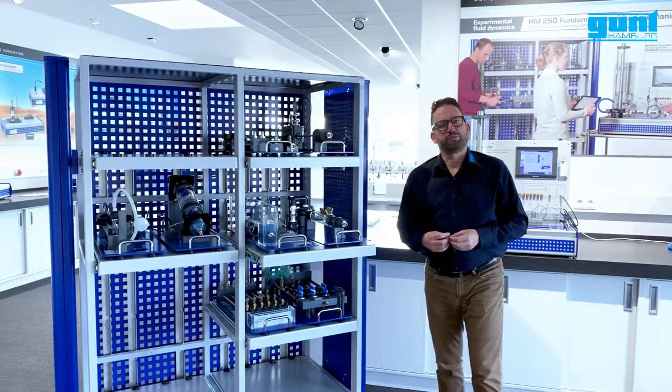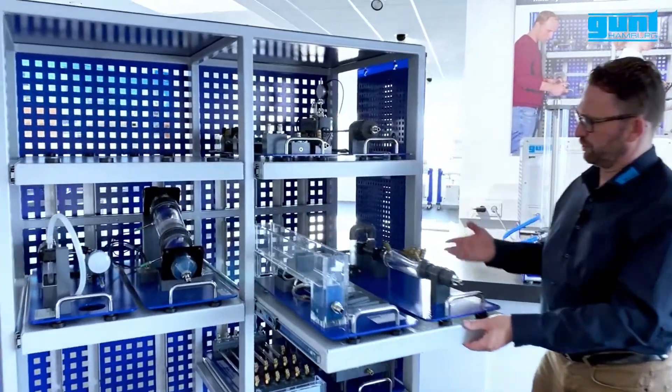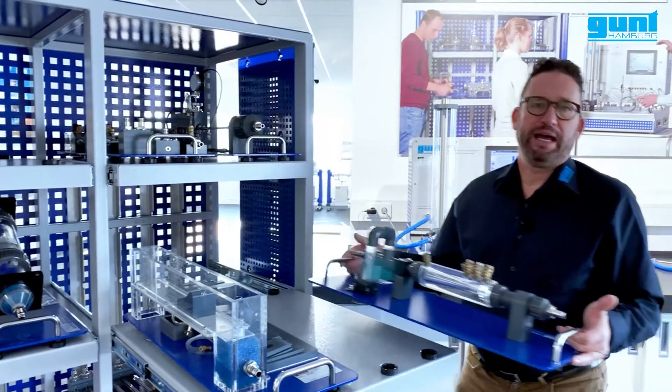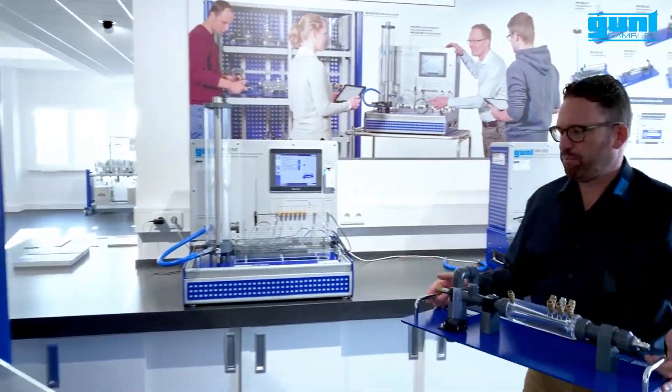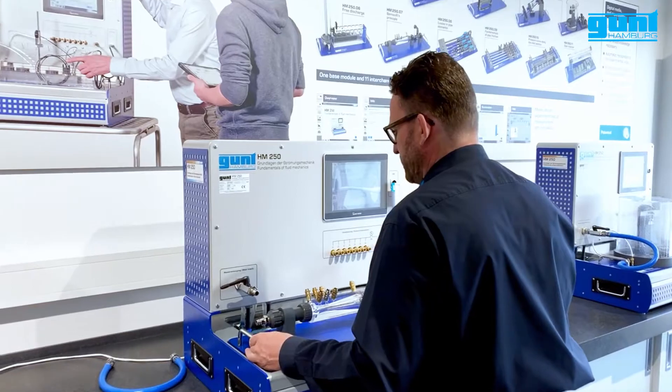When we want to conduct the experiment, we select the individual unit from the movable storage system, take it out, and as you can see it's very light, and place it straight on top of the HM250 base unit.